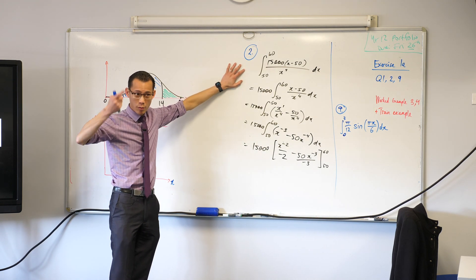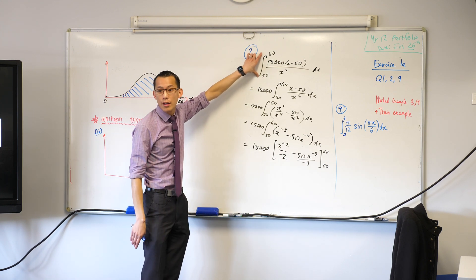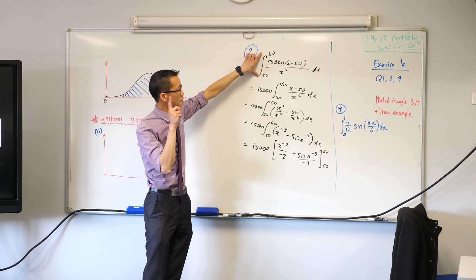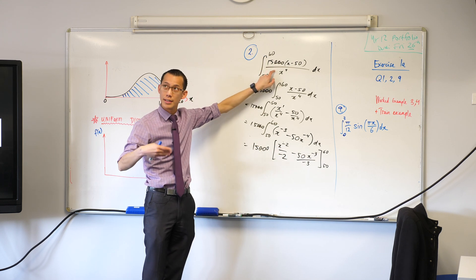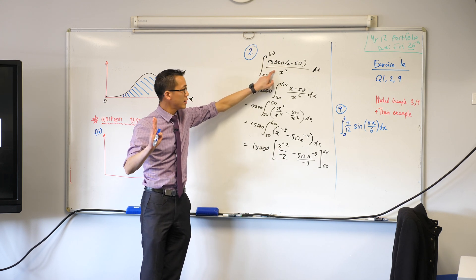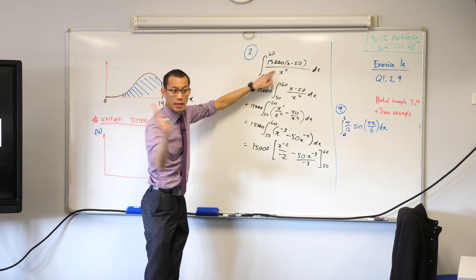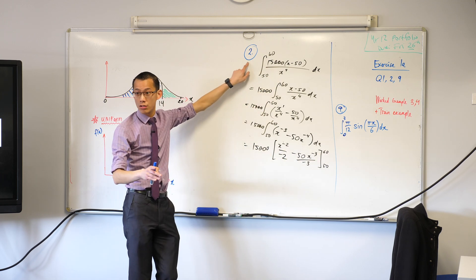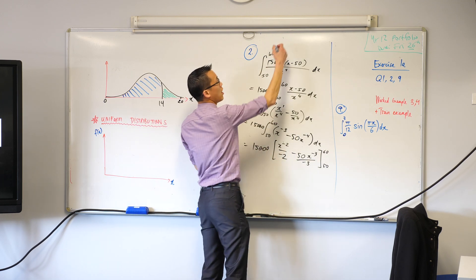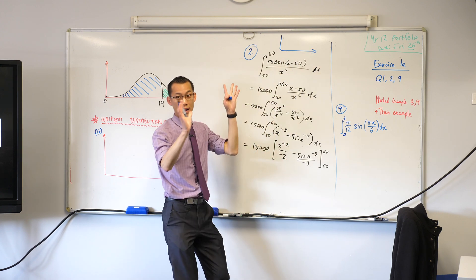For example this particular one here, the concept we wanted you to get in this question was where are the boundaries of this integral. From memory this particular probability density function it's defined from x equals 50 and then onwards. Can you just double check that question two, see the domain there?